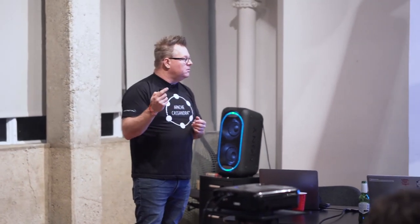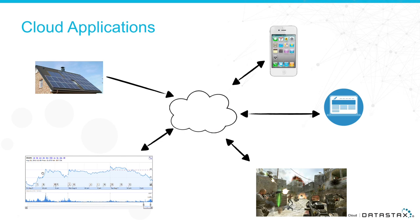Cloud applications — this is where everyone is writing their applications, and if you're not, it probably will eventually. Every cloud application has a basic need. We are an application database — Cassandra. DataStax, we're the experts in this. Any kind of data that is close to your users is the data we want to talk about. It's not a back-end database. It's not a Hadoop thing, a Spark thing. It's an application database.